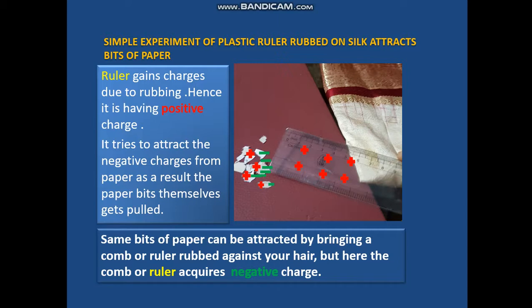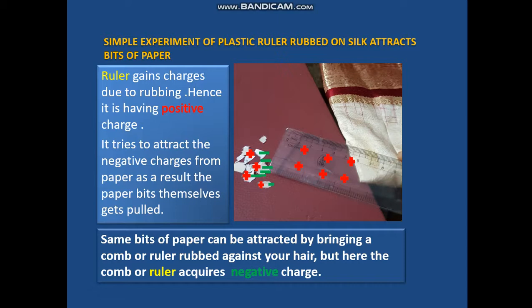The bits of paper can be attracted by bringing a comb or ruler rubbed against your hair. But here the comb or ruler acquires negative charge. You can try this experiment at home. Now why does this happen? Let us learn more about these charges in the electric dipole.